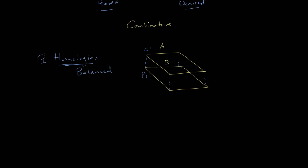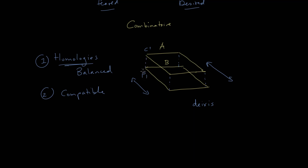The second type of relationship is what we might call compatible. If we take any two terms from either side — and if you remember from the previous video, each side is what we call a deixis — but terms that are non-homologous, such as P1 and negative C2, and we compare those two, we're dealing with terms that are on the same side but not homologous. They are compatible with each other.